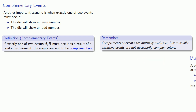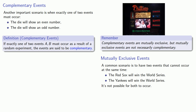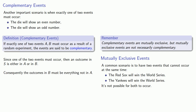Going back to our events — the Red Sox will win the World Series, and the Yankees will win the World Series — these events are still mutually exclusive because they can't occur simultaneously. But they're not complementary because it's possible for neither of them to occur and for some other team to win the World Series. Since one of the two complementary events must occur, an outcome in our sample space is either an outcome in A or an outcome in B, meaning the outcomes in B must be everything not in A. To emphasize this relationship, we often write B as A complement — that's A with a bar over it — and read this as 'A did not occur.'